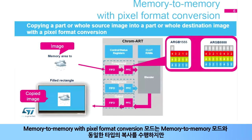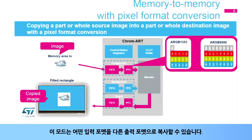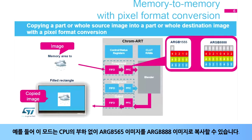Memory to memory mode with pixel format conversion is used to do the same type of copy as memory to memory mode but with a pixel format conversion. It can copy any input format to any output format. For example, it can copy an ARGB 565 image into an ARGB 888 image without having to use the CPU.